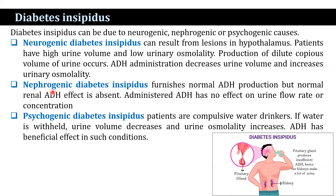Nephrogenic diabetes insipidus features normal antidiuretic hormone production, but normal renal ADH effect is absent. Administered ADH has no effect on urine flow rate or concentration.